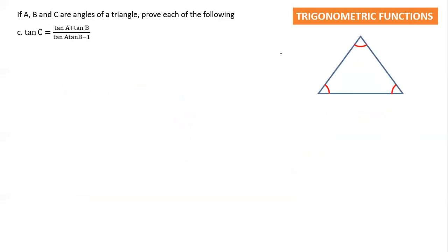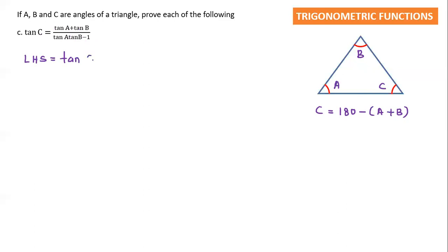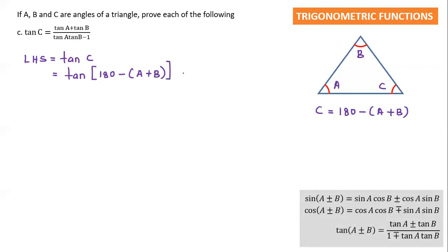Look at Question C. Again, the triangle has angles A, B, and C, where C = 180 minus (A plus B). This time I'm going to start from the left hand side, which is tan C. So tan C equals tan[180 minus (A+B)]. Now let's check the formula for this.